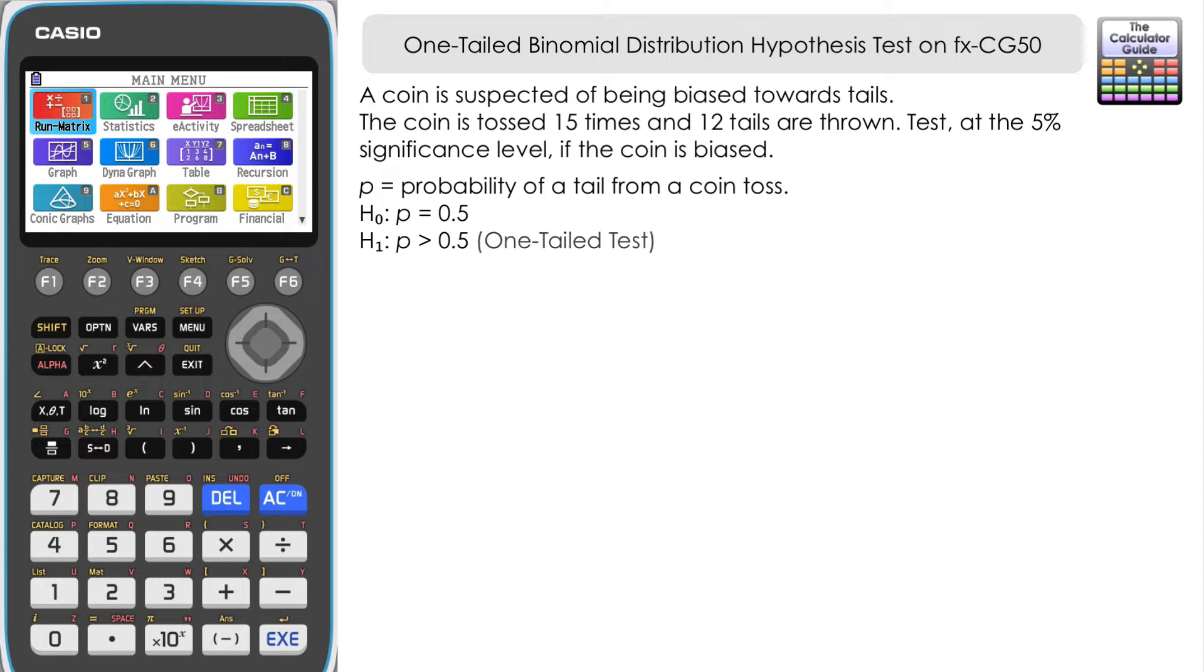This is what gives us the one-tail test. We're interested in the upper tail, it being greater than 0.5. That defines we've got a one-tail test. Our significance level, usually represented by alpha, is 5% for this question, or 0.05 in decimal equivalent that we'll be comparing against.